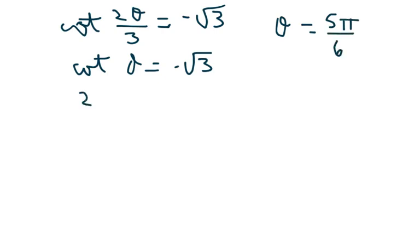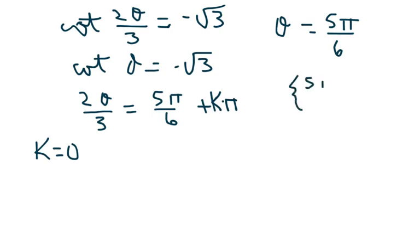We set 2 theta over 3 equals 5 pi over 6 plus pi times k. I tend to put the k in the back. So we already know one solution when k equals 0. We know that one solution is going to be 5 pi over 6. Let's try, no, it's not.